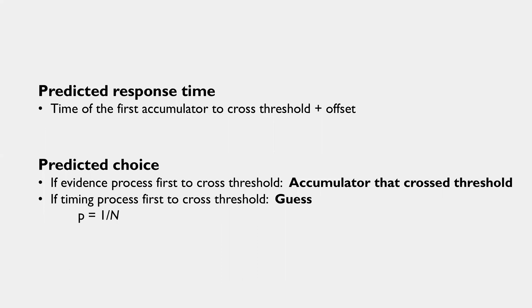So if it was one of the accumulators in the evidence process, then the response is just the accumulator to cross threshold. If the timing process was first to cross threshold, we assume that the decision maker just guesses between the n options.